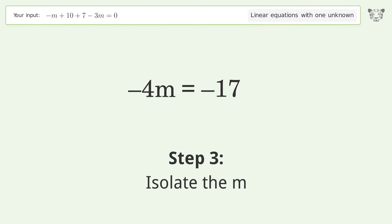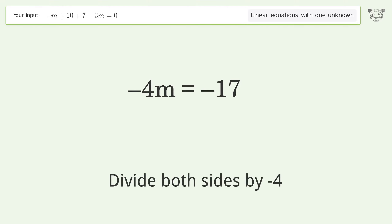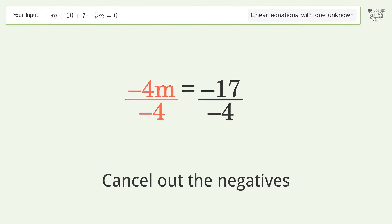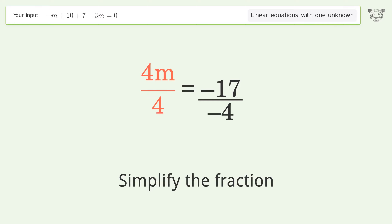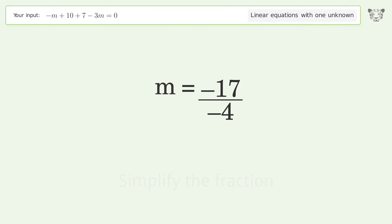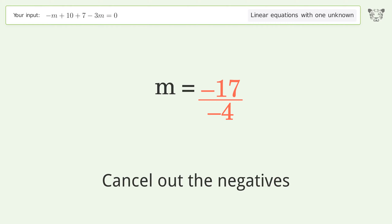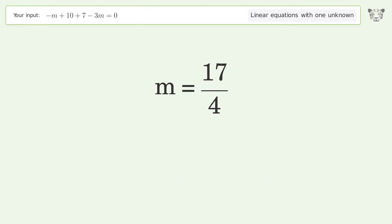Isolate the variable m by dividing both sides by negative 4. Cancel out the negatives and simplify the fraction. Cancel out the negatives again, and so the final result is m equals 17 over 4.